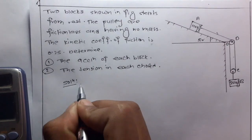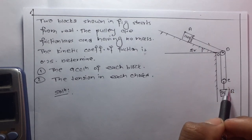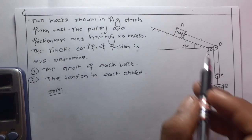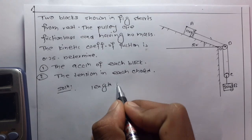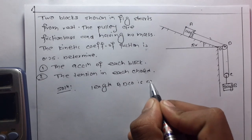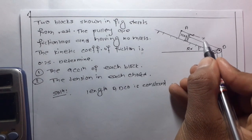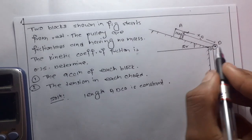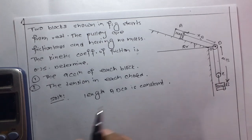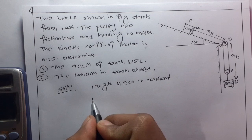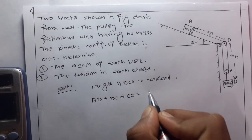For the solution, we know the length of rope used in the pulley is constant. So the length ADCO is constant. Let AD be XA and DC to O be XB.